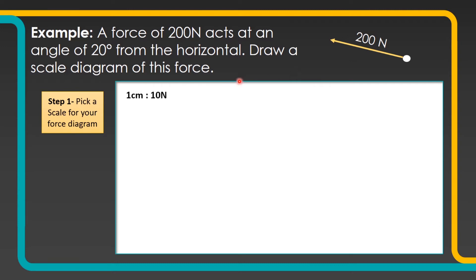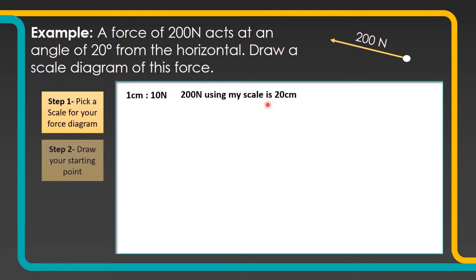The scale I'm going to use is 1 centimetre to 10 newtons, because when we work that out my 200 newton line is going to need to be 20 centimetres long, and that should fit nicely on my piece of paper.